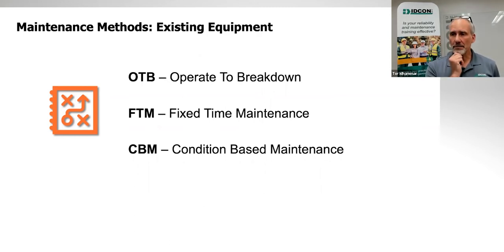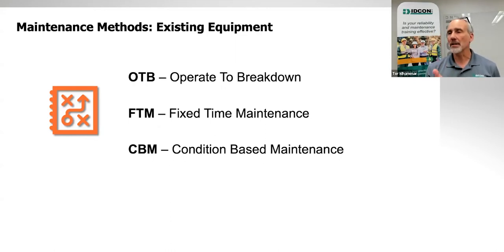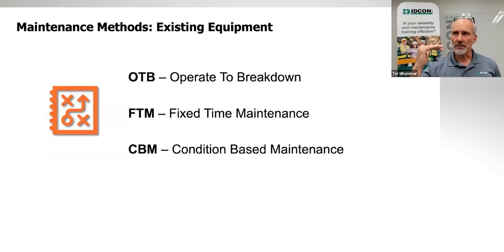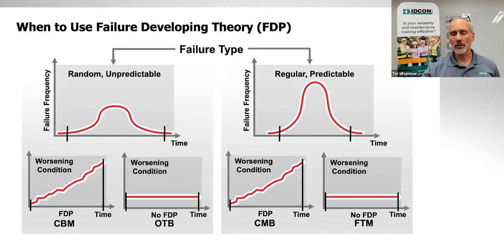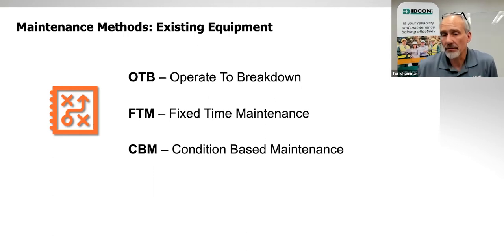Each piece of equipment in your plant right now is running under one of those three, or possibly a combination — such as condition-based together with fixed time. Some people inspect the equipment but also change all the belts once a year when they're down. When going through documentation, the first question is: can I operate this equipment to breakdown? In many cases that's too expensive.